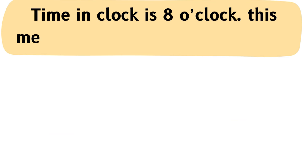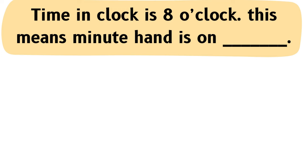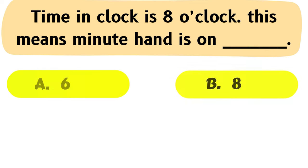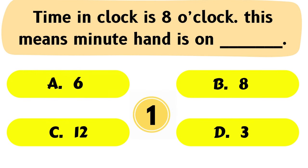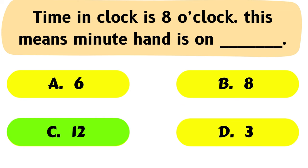Question No. 25: Time in clock is 8 o'clock. This means the minute hand is on ___. The correct answer is Option C: 12.